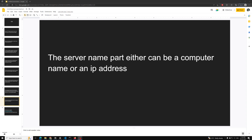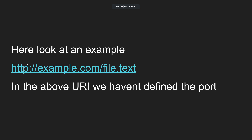Here's an example: http://example.com/file.txt. In this URL we haven't defined a port. When making a call through the HTTP protocol without specifying a port, the browser assumes the default port is 80. If you want to use a port other than 80, you can specify it using a colon. HTTP always requests through port 80 by default.